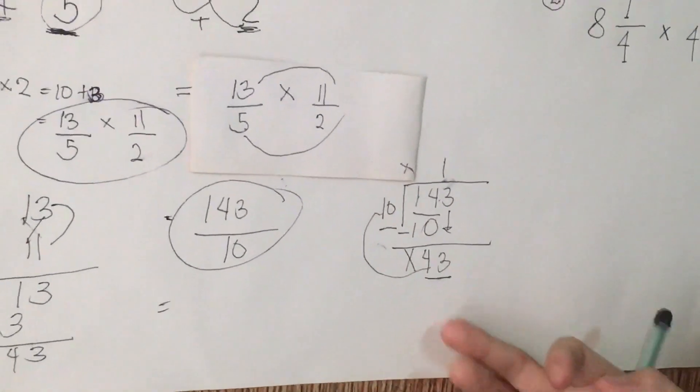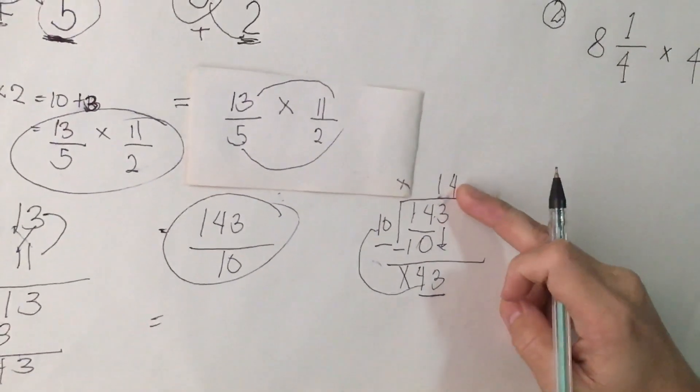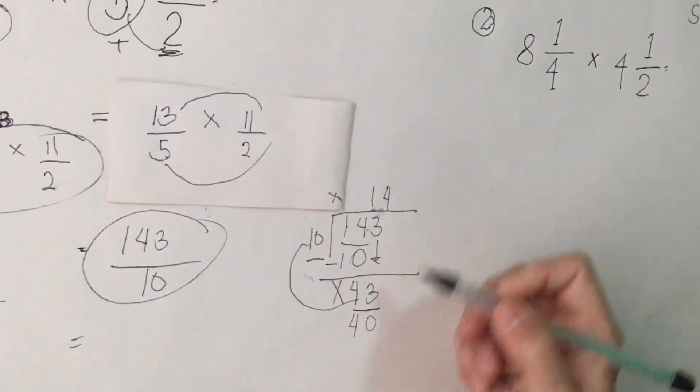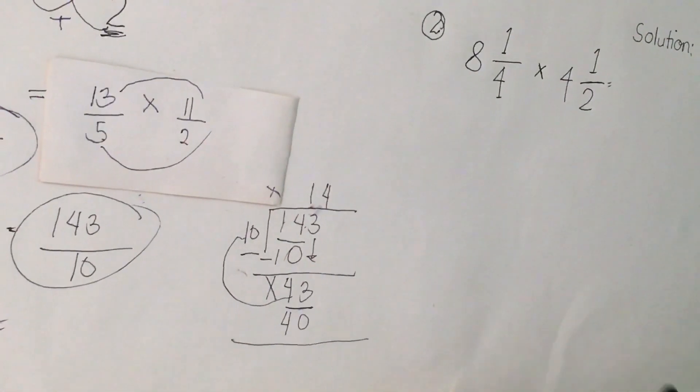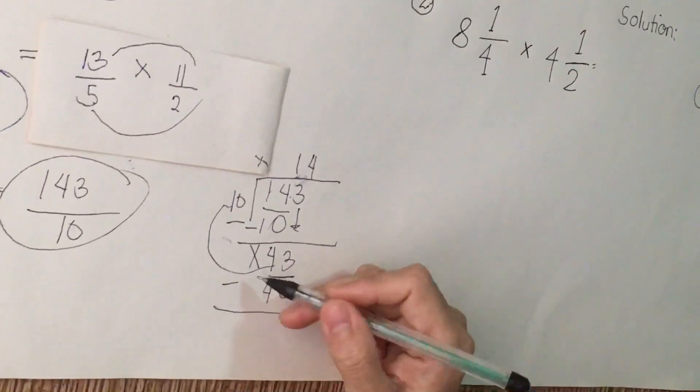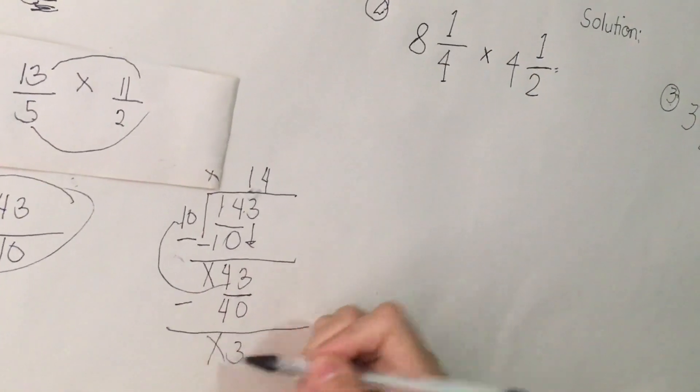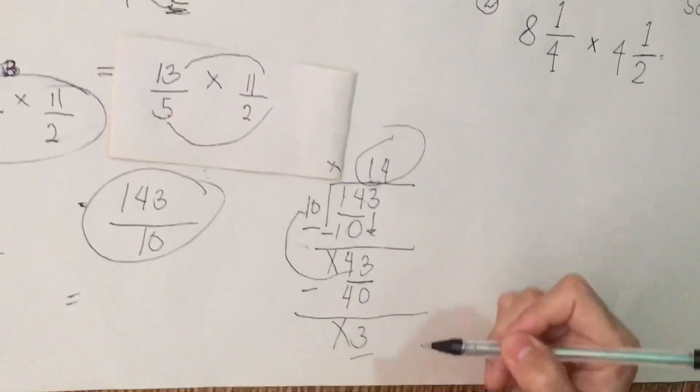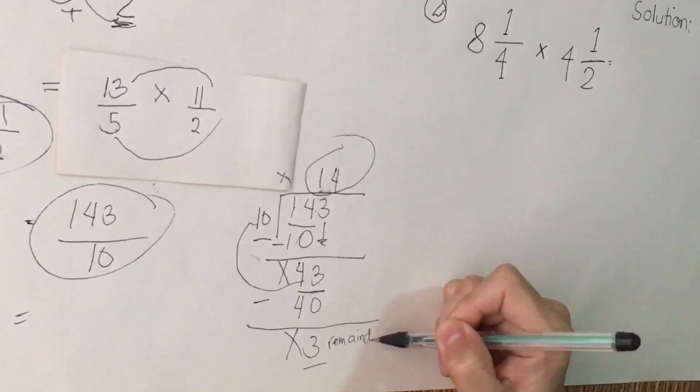We are going to divide 43 to 10. How many 10 in 43? So we have 4. Next, 4 times 10, the answer is 40. 3 minus 0, so I will bring down 3, nothing happened. 4 minus 4, I put it x. So now, our quotient is 14, so our remainder 3. Remainder 3.